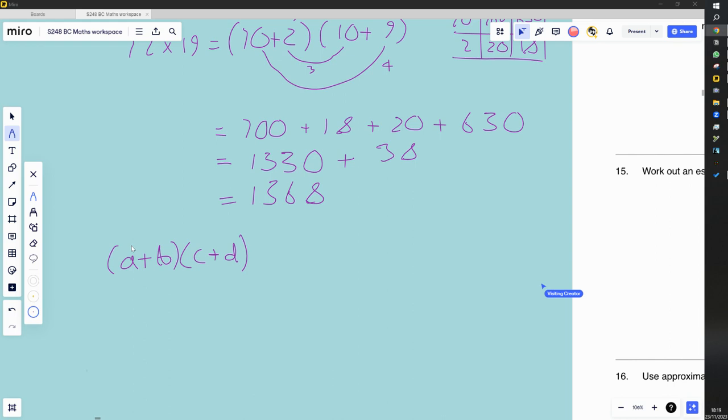So we do the same sort of thing as we did before. We multiply all the different combinations. So let's say that's our first combination. And then we can do that as our second combination. It doesn't really matter what order you do this in. So but I'm going to do it like this. So our first one would be A times C, which is AC.